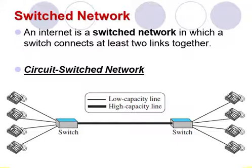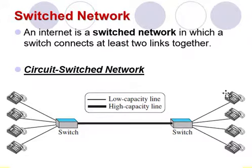Here, with an example, we show that this is the circuit switch having a dedicated connection. This dedicated connection is called the circuit, and it is always available between the two end systems. The switch can only make it active or inactive.